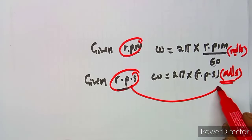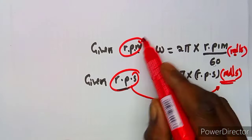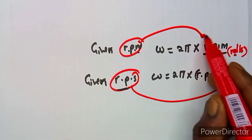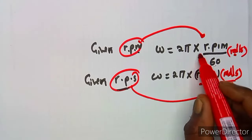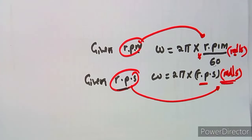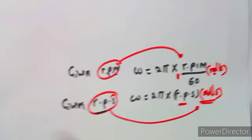The conversion key is: for revolutions per minute, divide by 60; for revolutions per second, you don't divide — just multiply by 2π as it is.